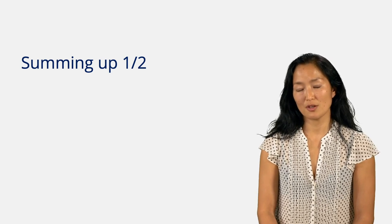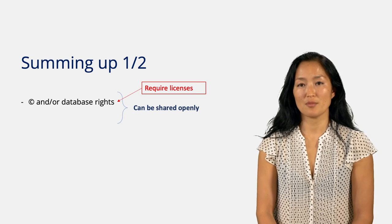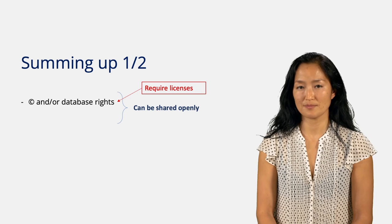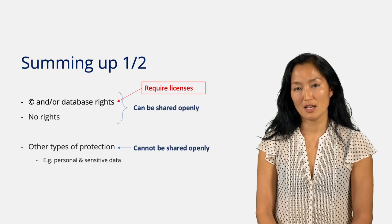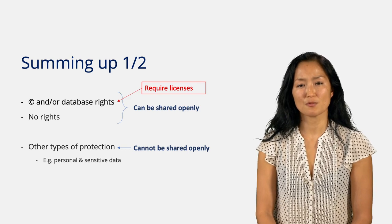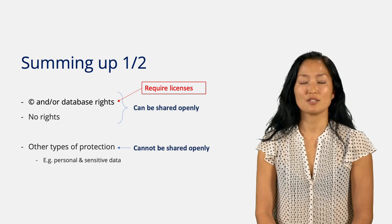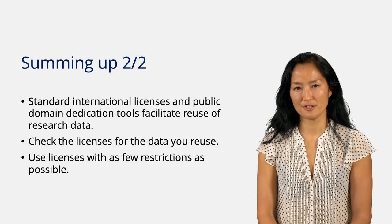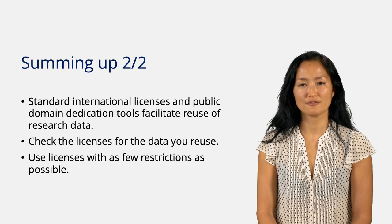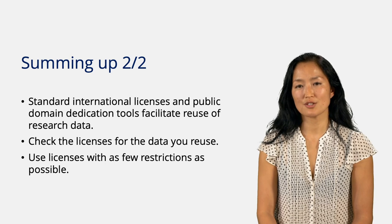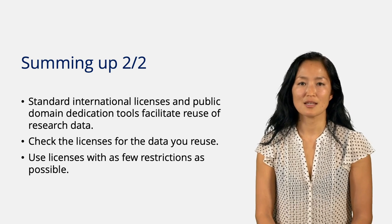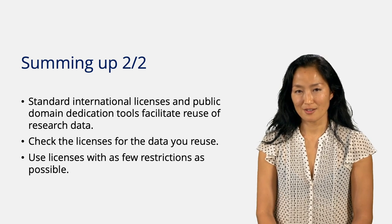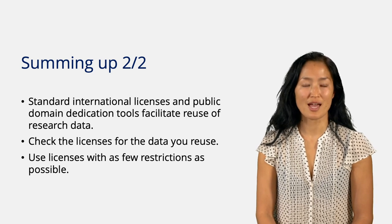Now we have come to the end of this video, so let's sum up. Research data differ as to whether they may or may not be shared openly, and if so, how. Some research data are protected by intellectual property rights, and these rights can be licensed. Some data are not protected by IP rights and can be reused freely — licenses cannot be applied to them. And some data may contain personal, sensitive, or other types of information which precludes them from being shared openly, and the question of licensing does not arise. Countries differ as to the content of intellectual property rights, what is protected and for how long. Standard international licenses and public domain dedication tools facilitate reuse of research data. When you use research data others have published, check the licenses, as there may be restrictions on the use of the data. And when you publish your own data, please use legal tools with as few restrictions as possible.